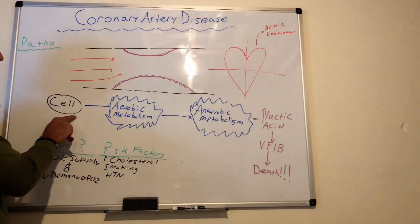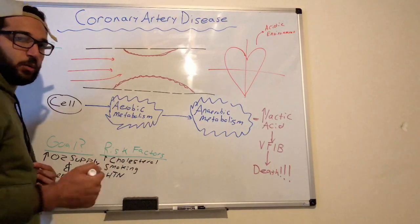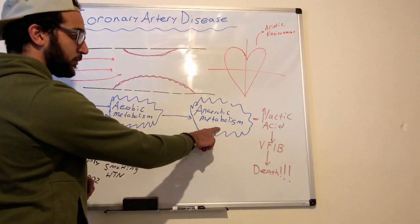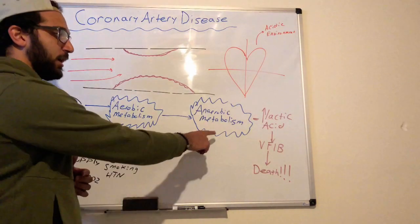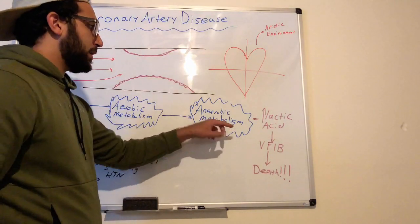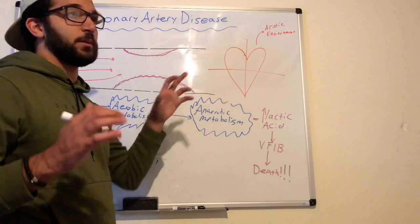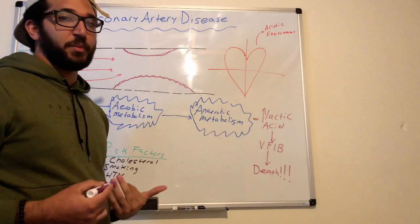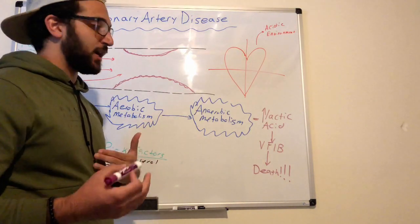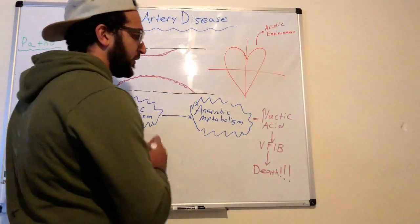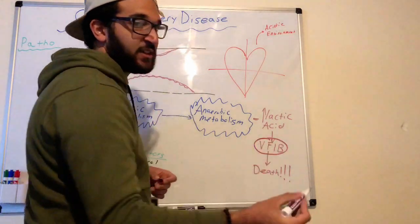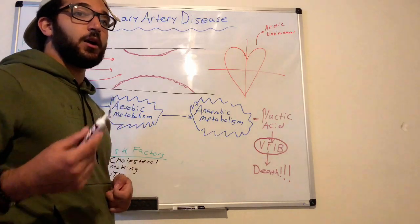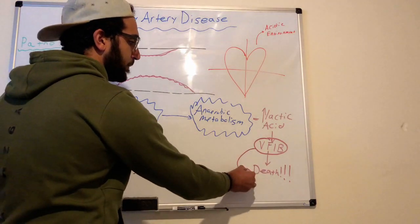Over time, the cells within the myocardium switch from aerobic metabolism — the normal process — to anaerobic metabolism. With anaerobic metabolism, the myocardium becomes an acidic environment due to the buildup of lactic acid. When it panics, over time it switches to a rhythm called ventricular fibrillation, also known as V-fib. V-fib, if not caught early enough, could lead to death.